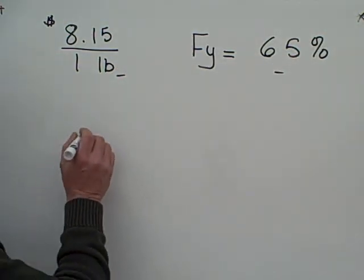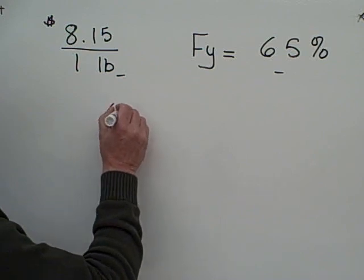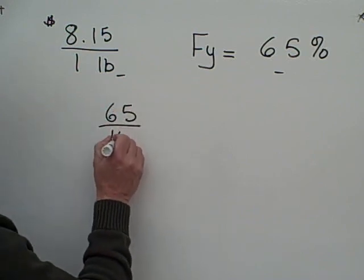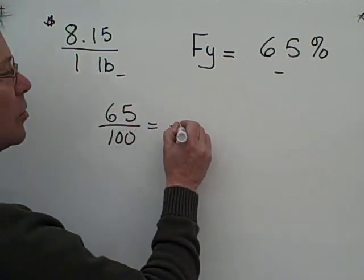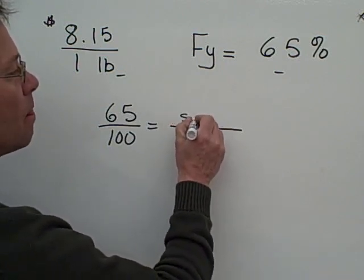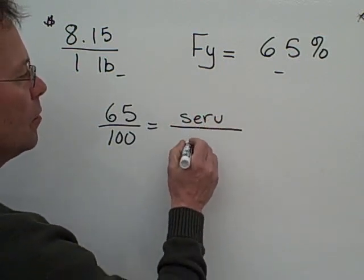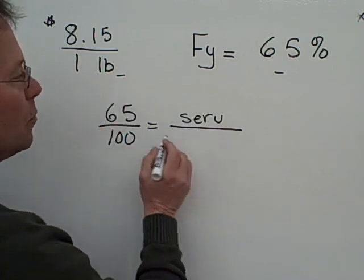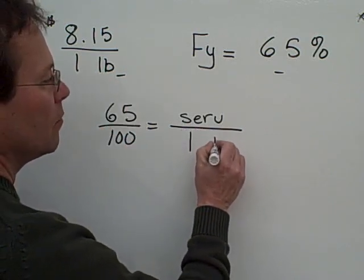So we want to put together and say food yield 65 over 100 is equal to the servable over the purchased, and we're purchasing one pound.